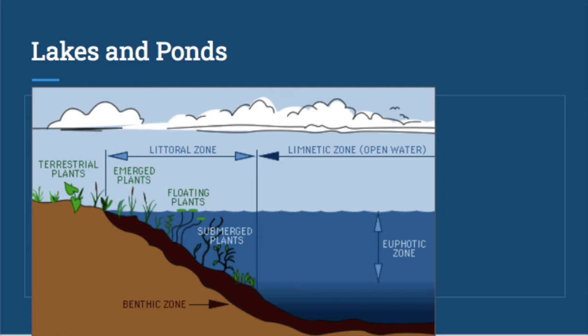The first zone is the littoral zone — the outer edge of the lake, which tends to be shallow. Because it is shallow and there's a lot of sunlight, plants are able to grow in the mud at the bottom. Those plants might be emergent, coming out of the water, or they might be submerged completely underwater but rooted to the ground. Most of the photosynthetic organisms in a lake or pond are around this shallow outer littoral zone. Moving out into the middle of the lake is the limnetic zone — too deep for rooted plants, but you have free-floating algae like phytoplankton that still go through photosynthesis.